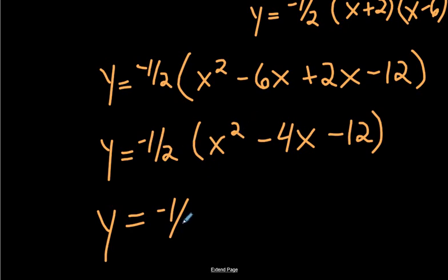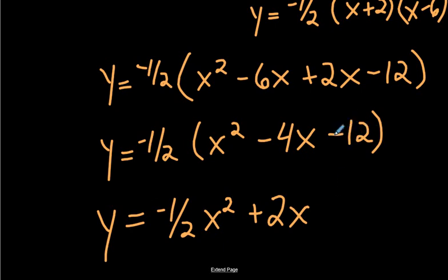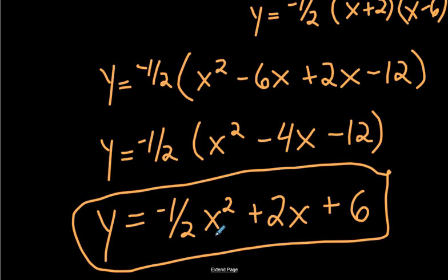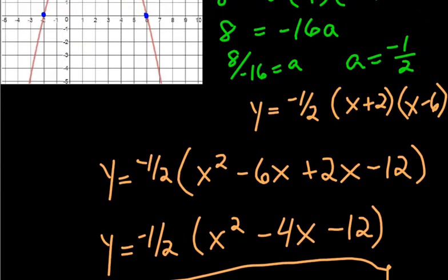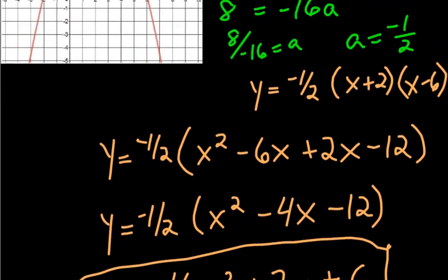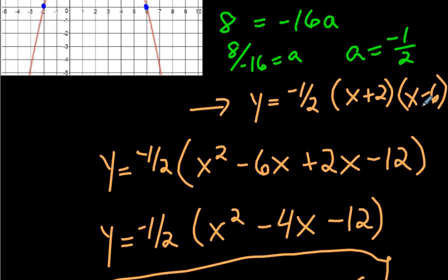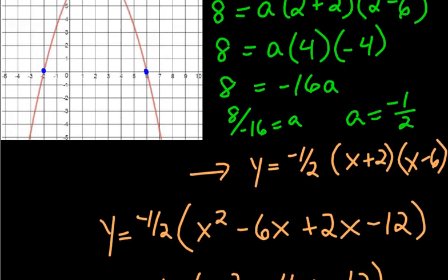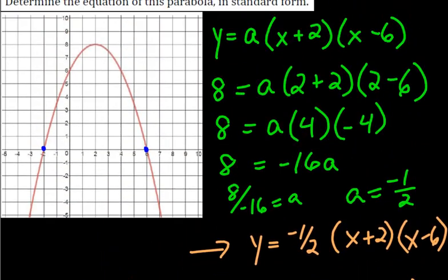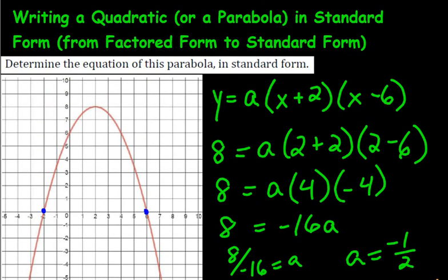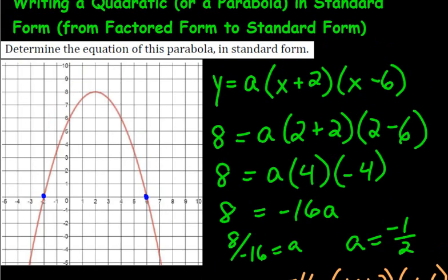Finally, we multiply negative one-half by everything: negative one-half times x squared is negative one-half x squared. Negative one-half times negative 4x is positive 2x — a half times 4 is 2, and two negatives make a positive. Negative one-half times negative 12 is positive 6 — half of 12 is 6. So our standard form is y = negative one-half x squared plus 2x plus 6. You can verify this in Desmos — factored form and standard form give the exact same parabola.